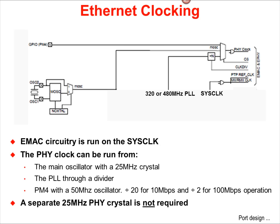The physical interface, or PHY, can be run from one of three sources: the main oscillator with a 25MHz crystal, the PLL through a divider, or an outside oscillator through the port M pin 4 input. A separate 25MHz crystal to drive the PHY is not required.